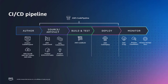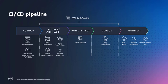We also have Cloud9 in the author stage, because Cloud9 is a cloud IDE where you can launch it in your AWS console and start typing code. In the source/artifact stage, we have CodeCommit — a fully managed source control service that hosts secure Git-based repositories. We have CodeArtifact, which is a fully managed artifact repository solution. Then we have Amazon ECR or ECR Public, a fully managed Docker container registry that makes it easy to store, share, and deploy container images. We also have Amazon CodeGuru, a developer tool that provides intelligent recommendations to improve code quality and identify an application's most expensive lines of code.